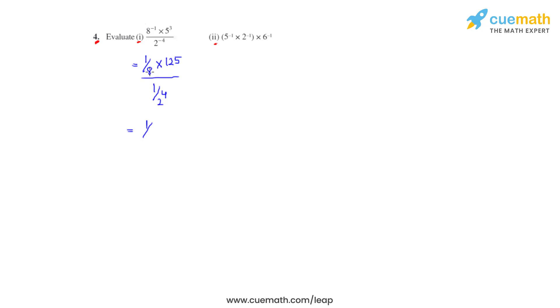So we get 1 divided by 8. As 8 is a cube of 2, we can write it as 2 raised to 3, divided by 1 over 2 raised to 4, multiplied with 125.